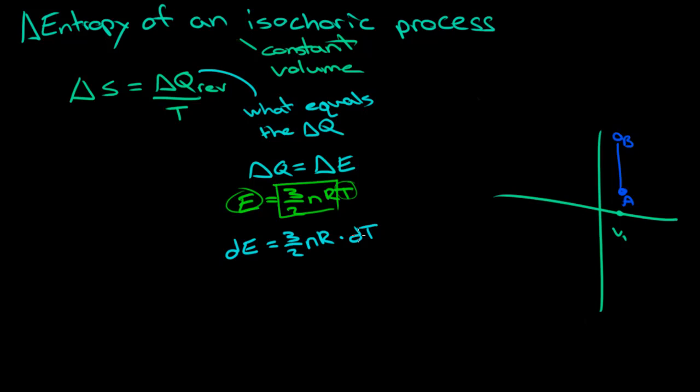And so, from that, we know that delta S, since delta S is delta Q over T, and delta E is delta Q, delta Q equals delta E, then what we can write is delta S equals delta Q, which was 3 over 2 nR times dT over T. Remember, because we have the T here.